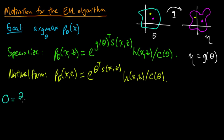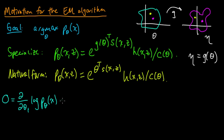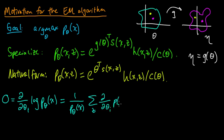So we set equal to zero the derivative of the log marginal probability of X with respect to theta_i. Maximizing the log is a little easier. So we get one over P_theta of X times the derivative of P_theta of X. And we expand P_theta of X as the sum over all Zs, giving us the sum of the derivatives over all Zs. Now we need an expression for this derivative.